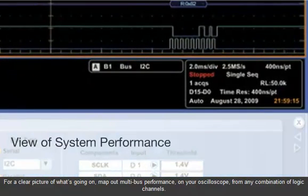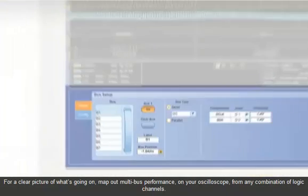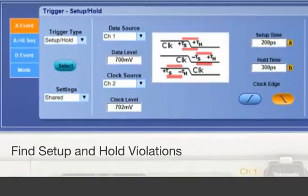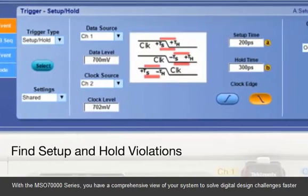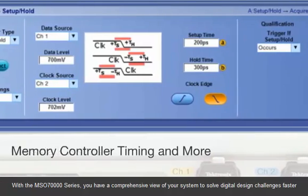For a clear picture of what's going on, map out multi-bus performance on your oscilloscope from any combination of logic channels. With the MSO-70,000 series, you have a comprehensive view of your system to solve digital design challenges faster.